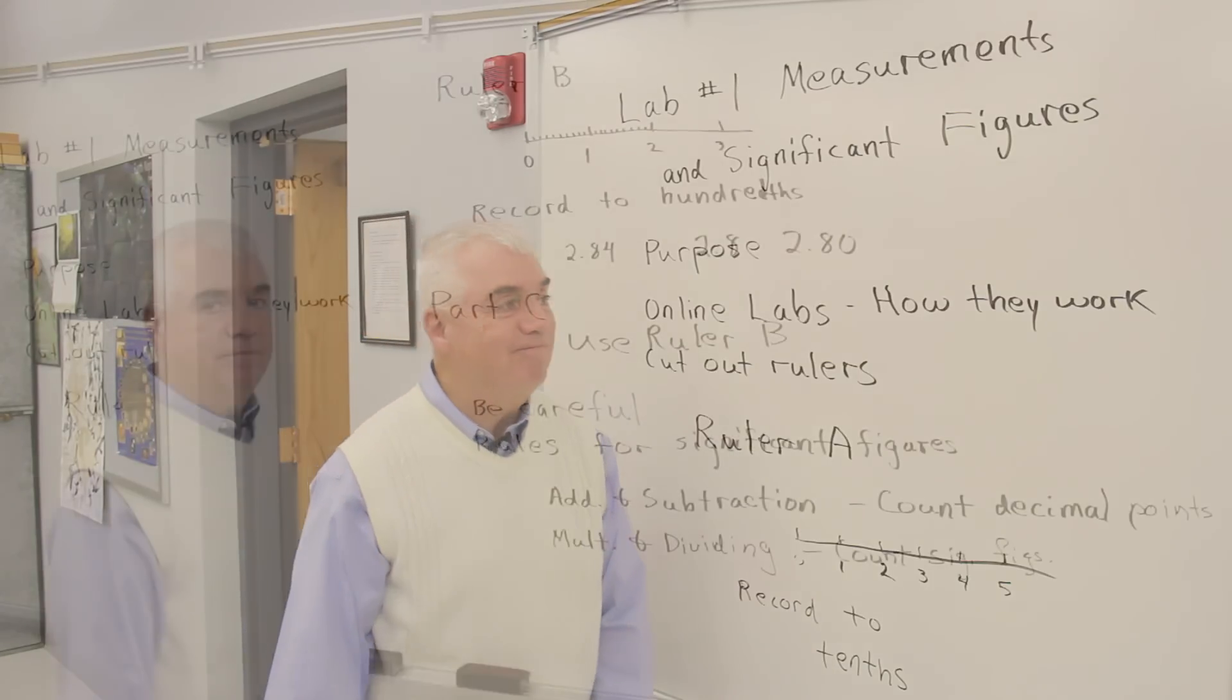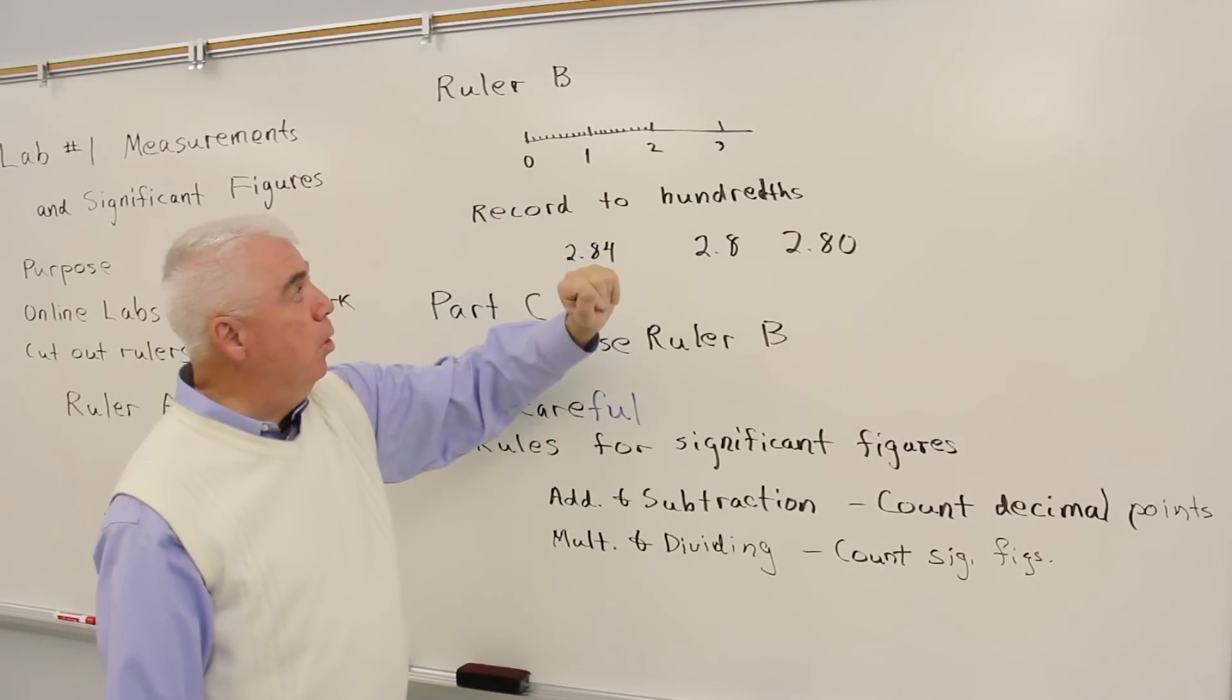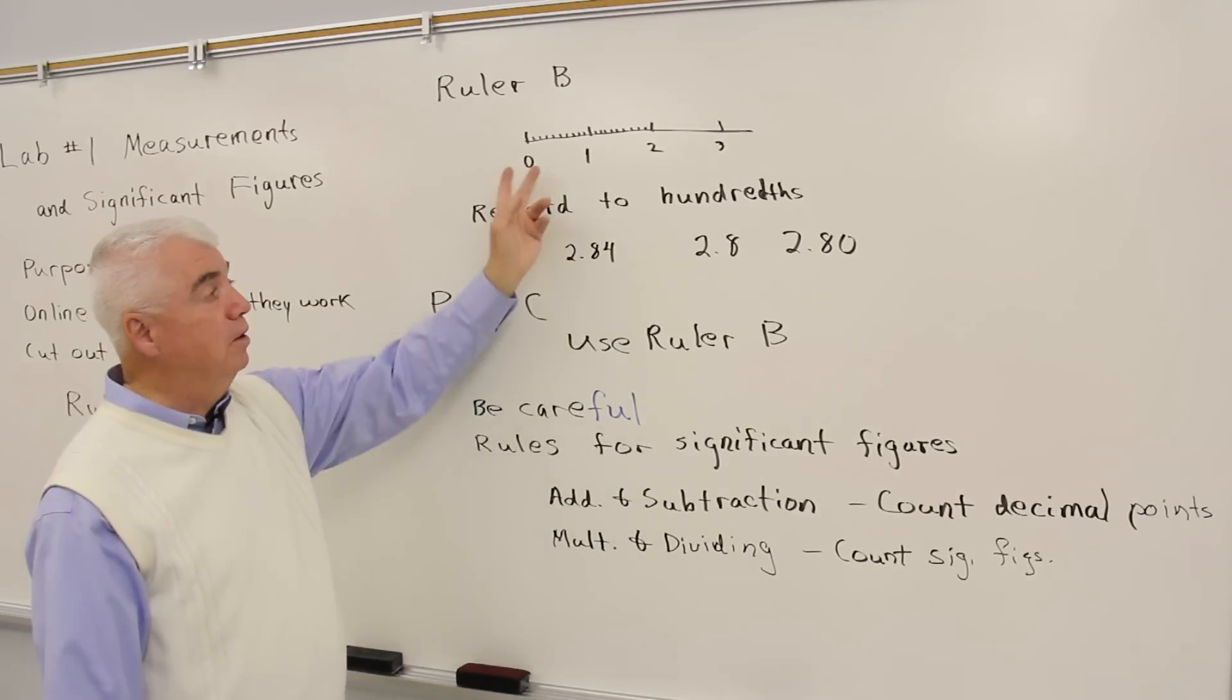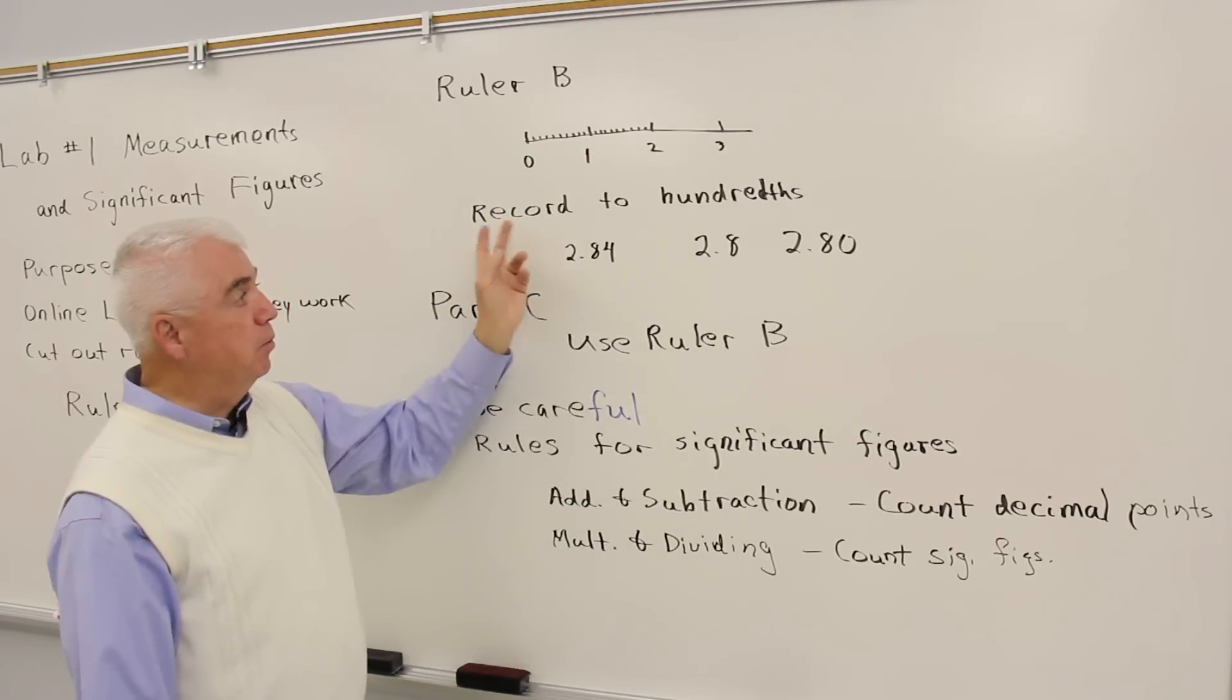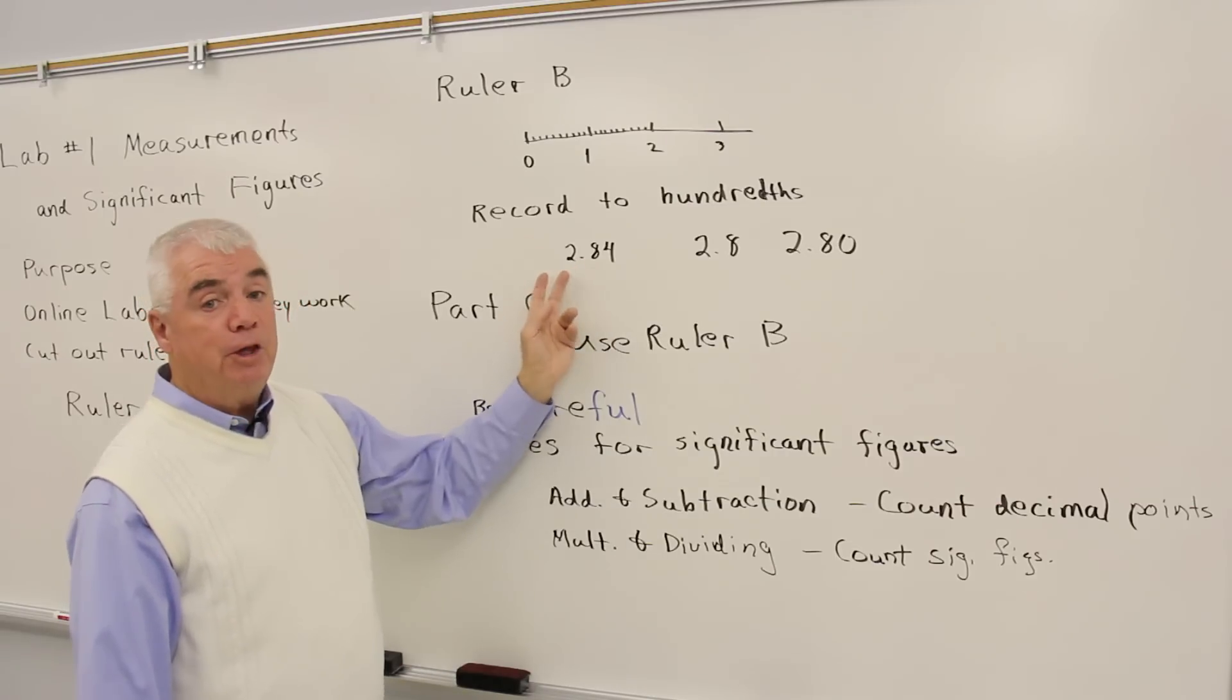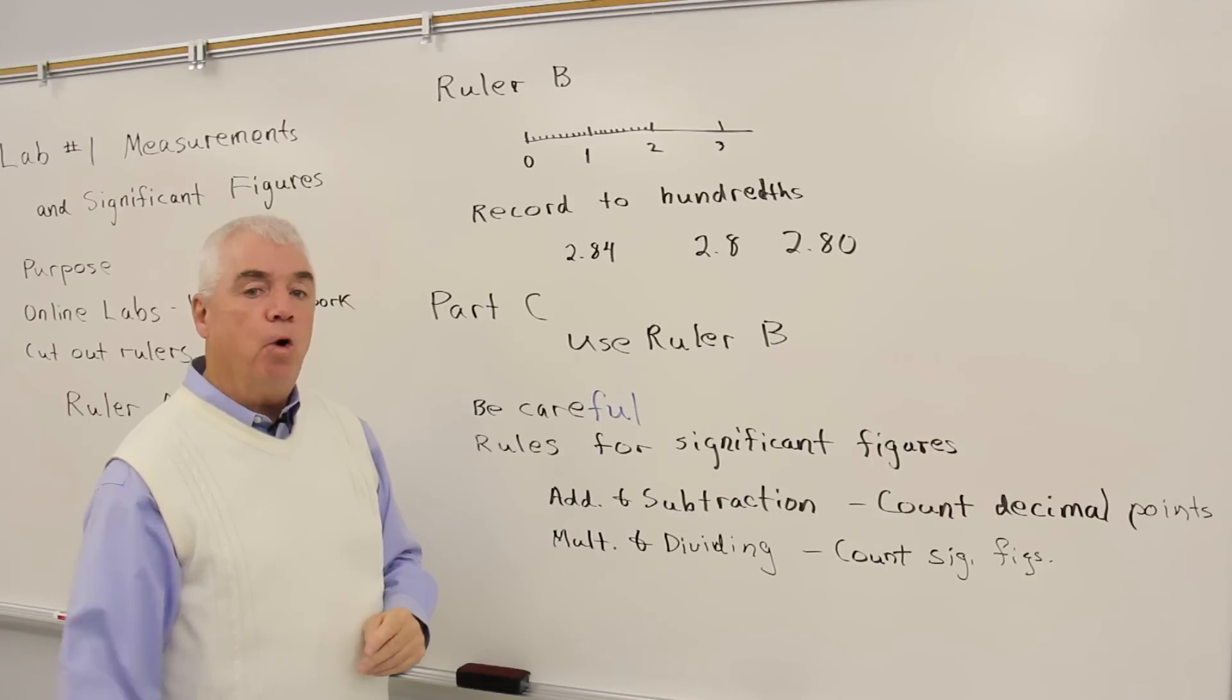Let's look at ruler B. Ruler B is a little more precise. It has markings to the ones and then it also has markings to the tenths. So now let's follow the same rule. We can estimate one more place than the number of markings. That means that we should record every measurement with ruler B to the hundredth, something like this, 2.84. I'm sure the 2.8, and the 4, the last digit, is always an estimate.